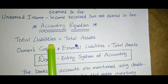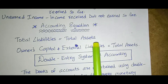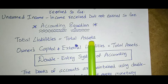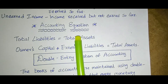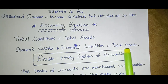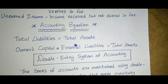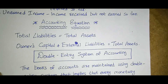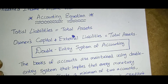Next we will see the accounting equation. In accounting, total liabilities is equal to total assets. Here, owners' capital plus external liabilities equals total assets.